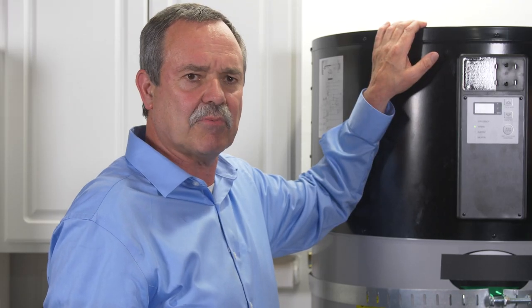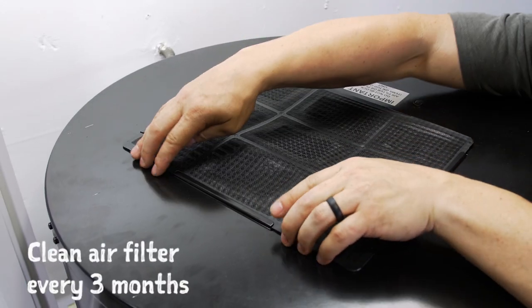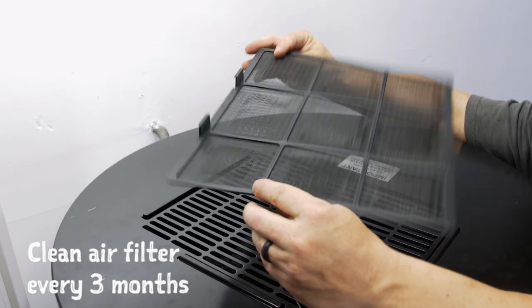And the big difference between heat pump water heaters and all other kinds of water heaters is they move air. And because they move air, they have a filter. And that filter should be checked and cleaned approximately every three months.